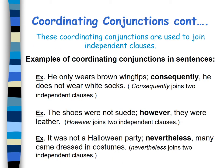Coordinating conjunctions are used to join independent clauses. Example 1: He only wears brown wingtips. Consequently, he does not wear white socks. If you look closely, you will find that 'consequently' joins two independent clauses. The first clause is: he only wears brown wingtips. And the second one is: he doesn't wear white socks. Two independent clauses — each one makes sense on its own.